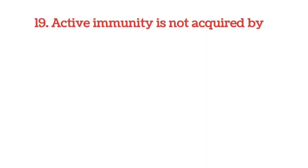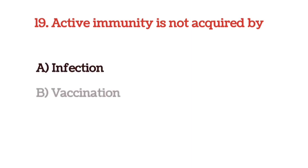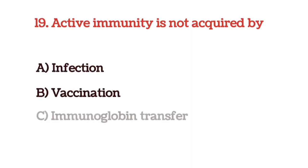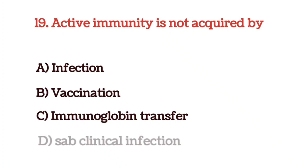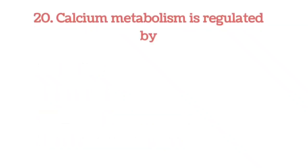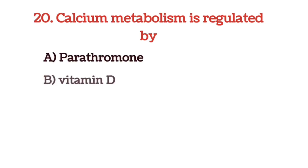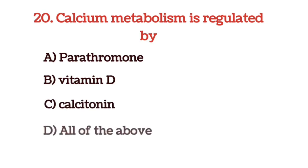Next question: active immunity is not acquired by — options are infection, vaccination, immunoglobulin transfer, and subclinical infection. The answer is option C, immunoglobulin transfer. Calcium metabolism is regulated by — options are parathormone, vitamin D, calcitonin, and all of the above. The answer is option D, all of the above.